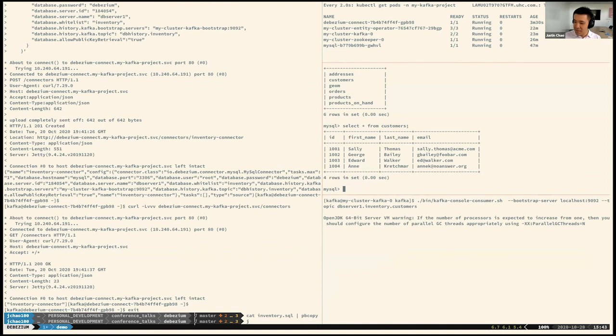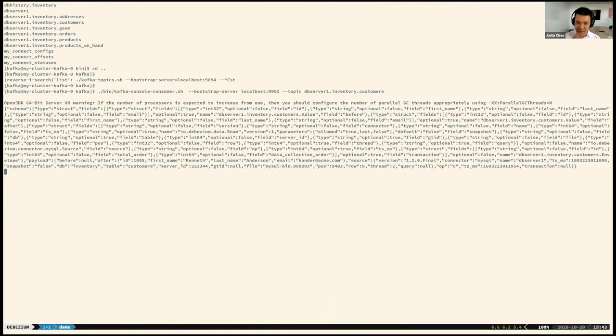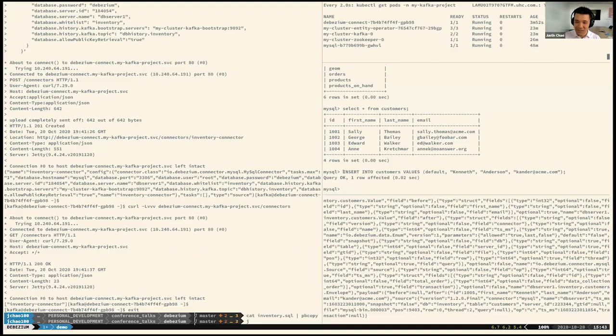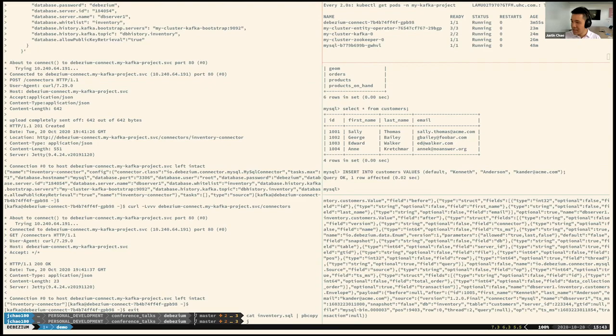Okay, so now if we go ahead and run the console consumer against the customers table, what happens if we insert a new customer? So I'm going to go ahead and insert Kenneth Anderson and right off the bat immediately you can see that the Kafka console consumer spit out the change event that happened. This change event is in JSON format. It's a little bit difficult to read but fortunately we have in our slide deck a nicely formatted change event for you.